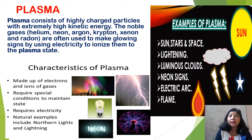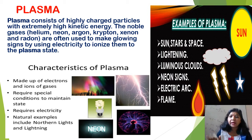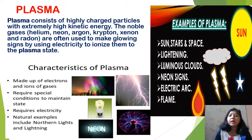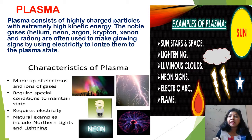The noble gases — helium, neon, argon, krypton, xenon, and radon — are often used to make glowing signs. Electricity is used to ionize them into the plasma state. Like neon lights and helium lights, all these particles are in plasma. Even the sun's light and the stars' light are due to plasma. The glowing light is due to the plasma — highly energetic charged particles.